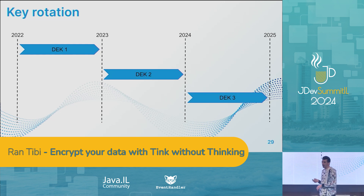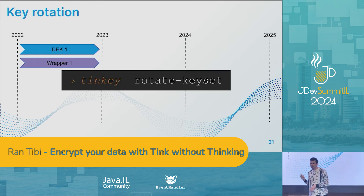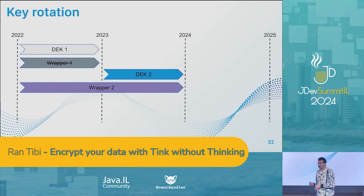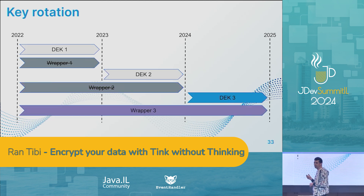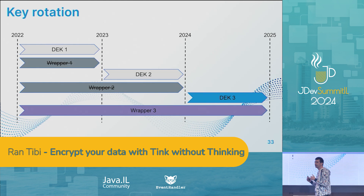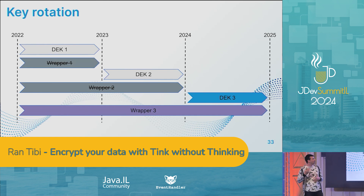Tink does it for us by keeping the previous key in the wrapper every time we apply a rotation. For 2022, we have the DEK and its associated wrapper. Then we use Tinkey to rotate the keyset — Tinkey will create a new DEK, and we get a new wrapper. The wrapper contains the new key for 2023, which is marked as the primary key, meaning we use it to encrypt new data. But it also holds the DEK for 2022 so we can decrypt its associated data. And the same for 2024 — the new DEK will be marked as the primary key for encrypting new data, while the 2022 and 2023 keys remain in the wrapper so we can decrypt their associated data.